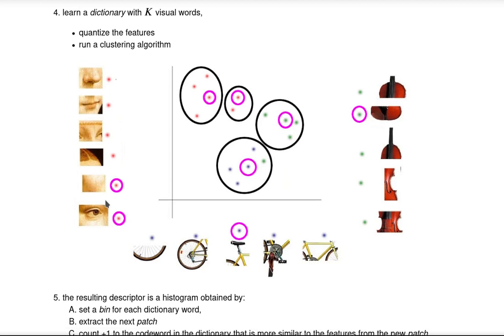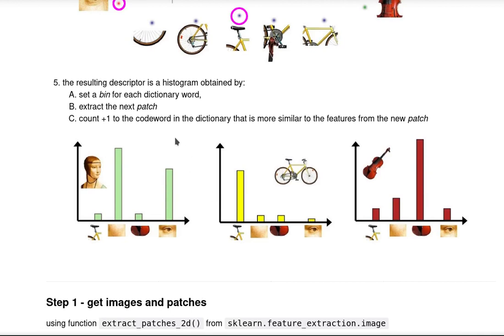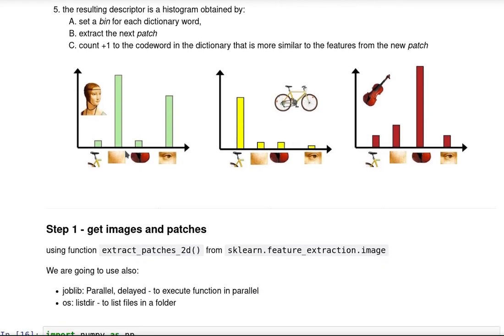The resulting descriptor is a histogram obtained by setting a bin for each dictionary word. In this case the four words we defined. We extract the next patch from an image we want to analyze and count one more to the code word in the dictionary that is more similar to the features from the new patch. In case of clustering, we can just use the clustering model to infer what is the most similar patch. By counting the frequency, we can build a descriptor that well represents the entire image.